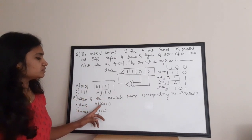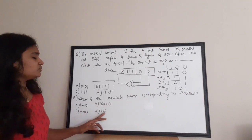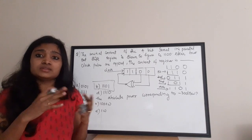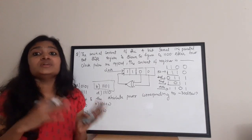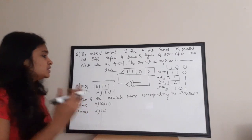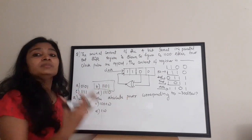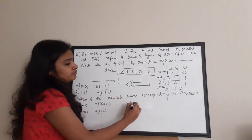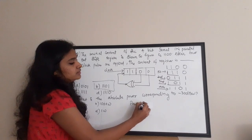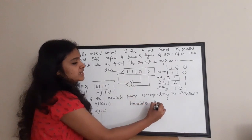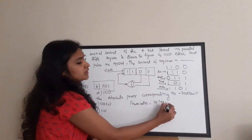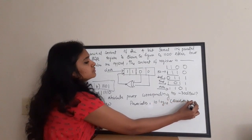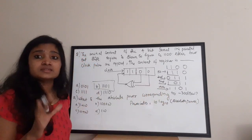The next question: what is the absolute power corresponding to minus 30 dB? Options are A) 1 milliwatt, B) 1000 watt, C) 10 milliwatt, D) 1 watt. This is a straightforward question. You only need to know how to convert absolute power to dB power. The equation is: power in dB = 10 × log₁₀(absolute power).